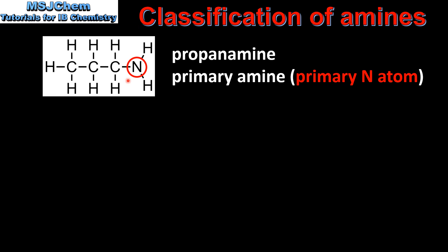Our first example is propanamine which is a primary amine. A primary amine has a primary nitrogen atom which is bonded to one other carbon atom.